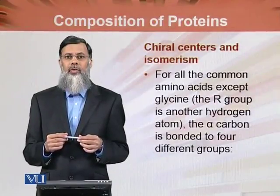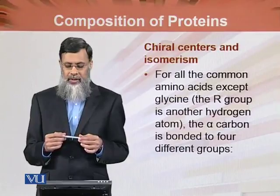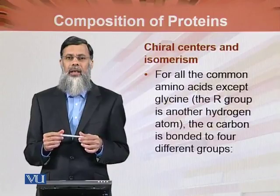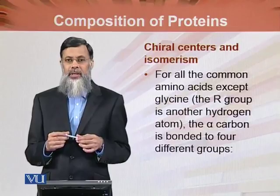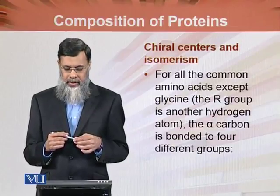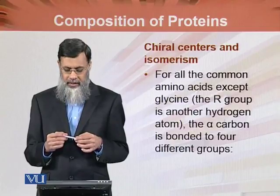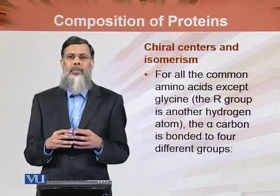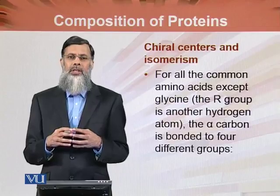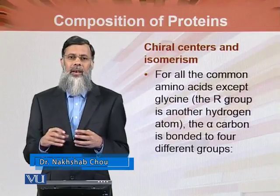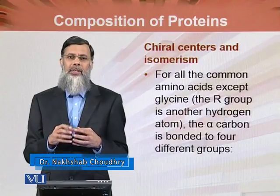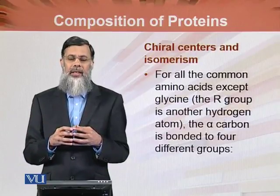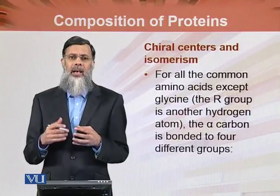In this module, we will continue with the composition of proteins with reference to chiral centers and isomerism, as we have discussed this in detail in the chemistry of carbohydrates. For all common amino acids except glycine, the alpha carbon is bound to four different groups. This means that for the standard twenty amino acids, all of them except glycine, the alpha carbon has four different groups attached, making them chiral centers.